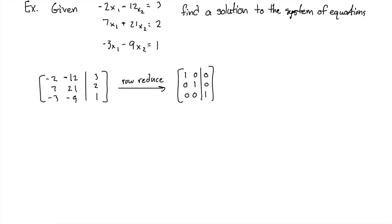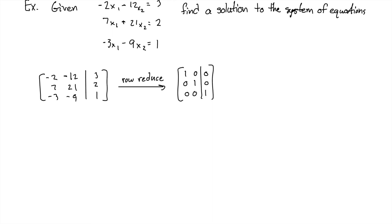What this means is that there will be no solution. Because if we look at this bottom row, we will get 0X1 plus 0X2 equals 1, or in other words, 0 equals 1, which is not correct. So the answer is no solution.